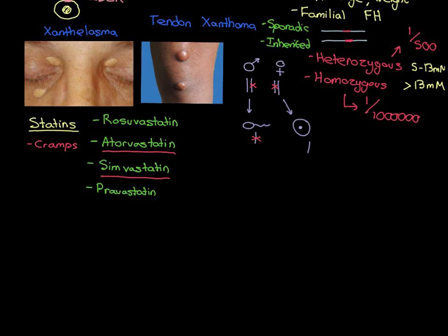Simvastatin is gradually replacing atorvastatin as the first-line statin. Rosuvastatin is the most powerful - if we put someone on a statin and their cholesterol does not come down as much as we'd like, we can raise the dose, and if it still doesn't work, move them to a more powerful one, generally rosuvastatin. Pravastatin is hardly ever prescribed - it's the least potent - but I include it for completion as you do occasionally see people on it.